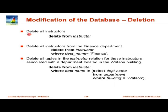The last topic for today is modification of the database — starting with deletion. DELETE FROM instructor deletes all instructors. DELETE FROM instructor WHERE dept_name = 'Finance' deletes instructors in the finance department. A more complex example: delete instructors whose department is in the Watson building — DELETE FROM instructor WHERE dept_name IN (SELECT dept_name FROM department WHERE building = 'Watson'). The subquery returns all departments in Watson, and this deletes instructors whose department is in that set.